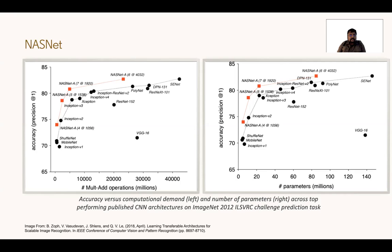On the left, the x-axis refers to multiply-and-addition operations in the millions, and the y-axis is accuracy, which is precision at one. Different variants of NASNet A outperform all other algorithms. In the brackets for the different variants, the first number refers to N, the number of normal cells, and the second number refers to the number of channels in the last-but-one layer. The same story repeats when you change the x-axis to the number of parameters in the millions. This was one of the first popular examples of convolutional networks built using some kind of architecture search.